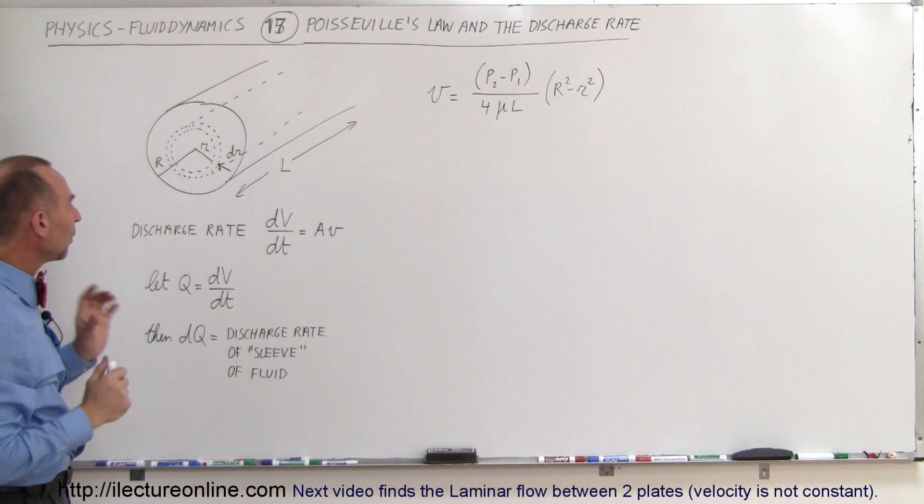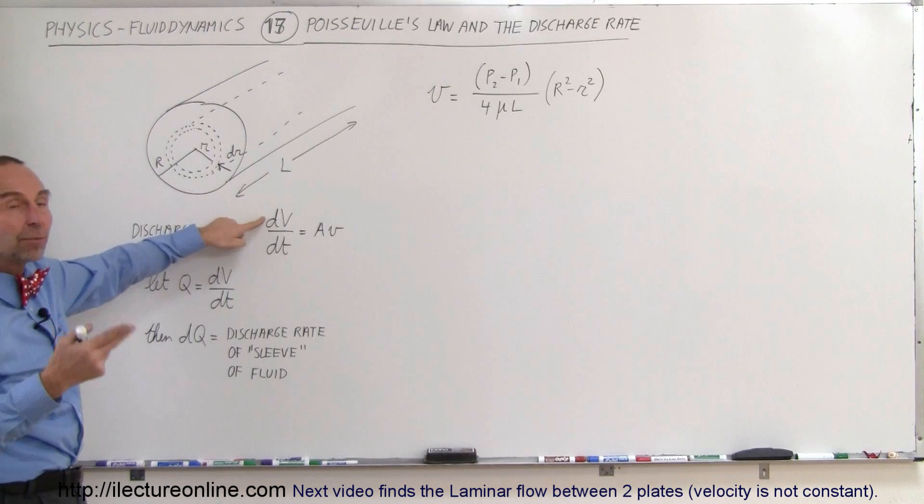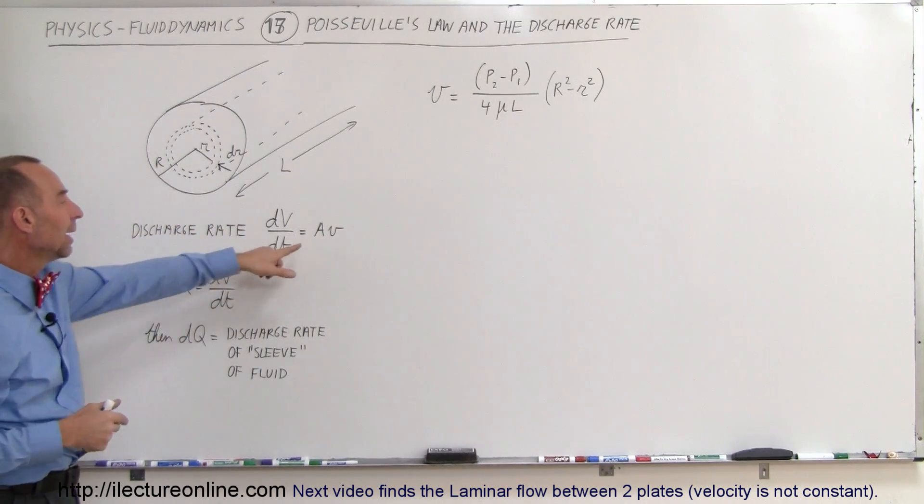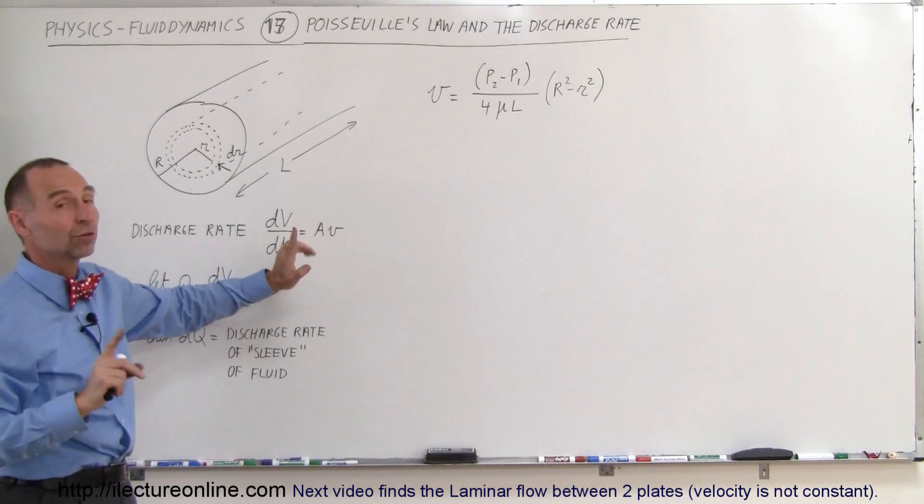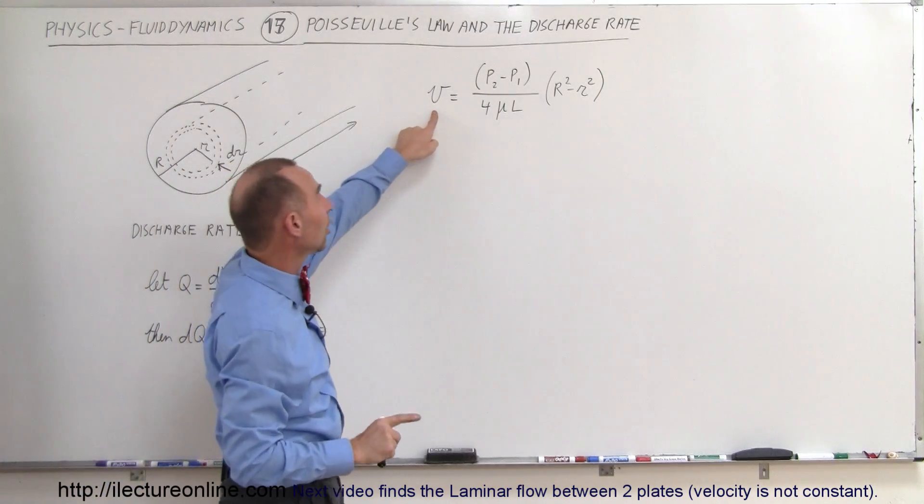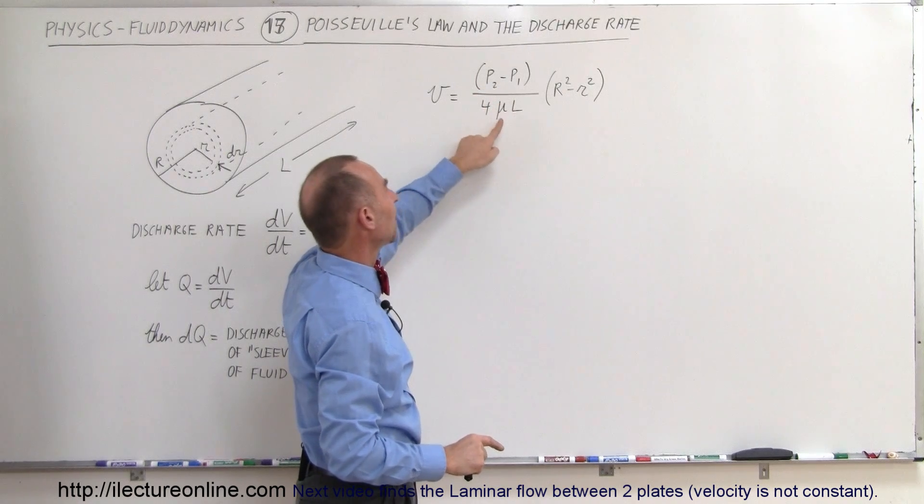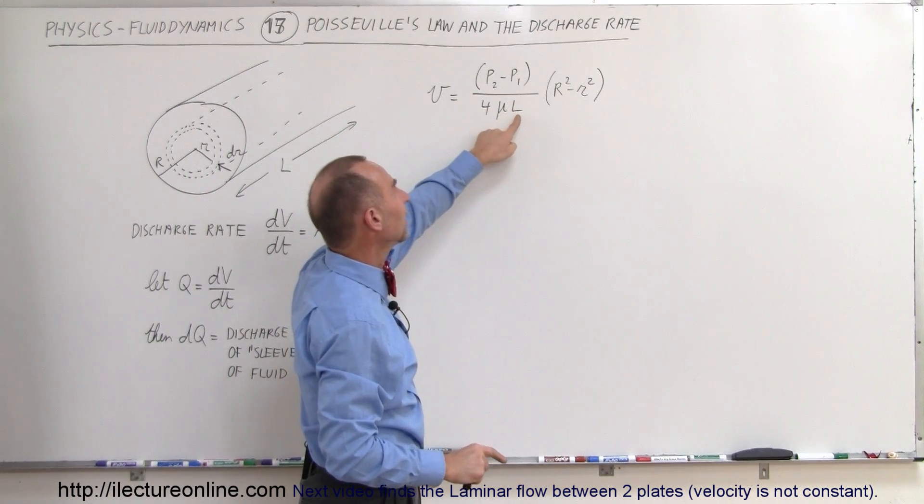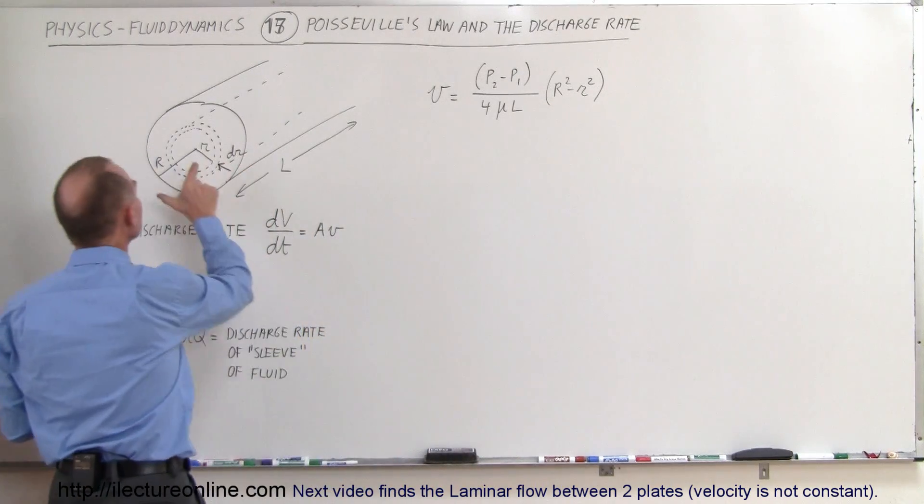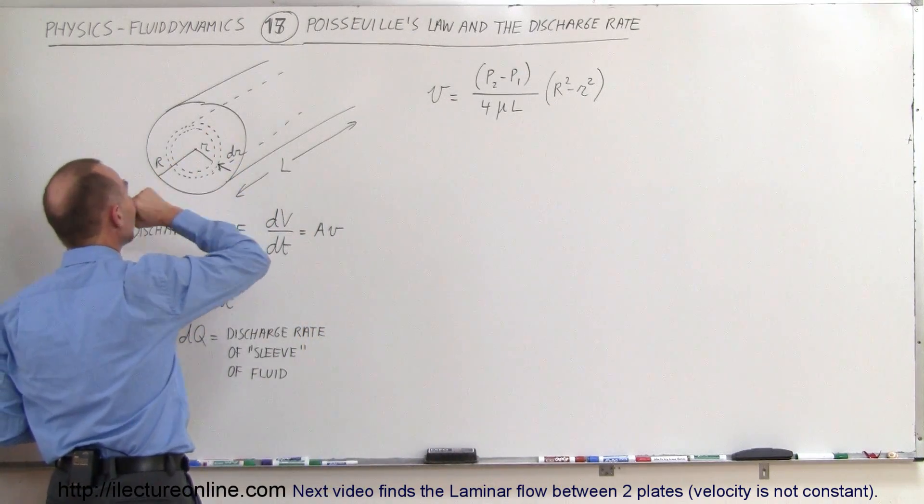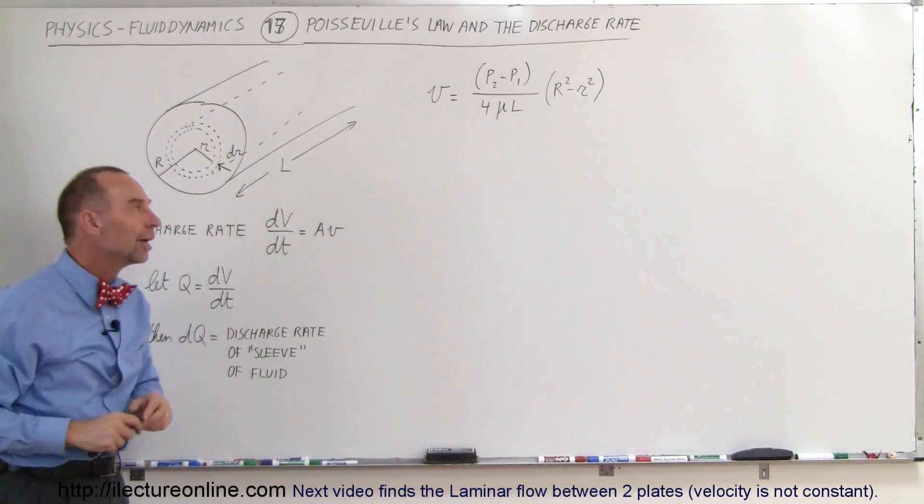Now what we're going to do is say the discharge rate by definition is the amount of volume per unit time that comes through the pipe, and that is equal to the cross-sectional area of the pipe times the velocity. The velocity, according to Poiseuille's law, is equal to the difference in the pressure divided by four times the coefficient of viscosity times the length of the pipe, and then times r squared minus little r squared, r being the radius of the pipe, little r being any position inside the pipe from the center to the edge.